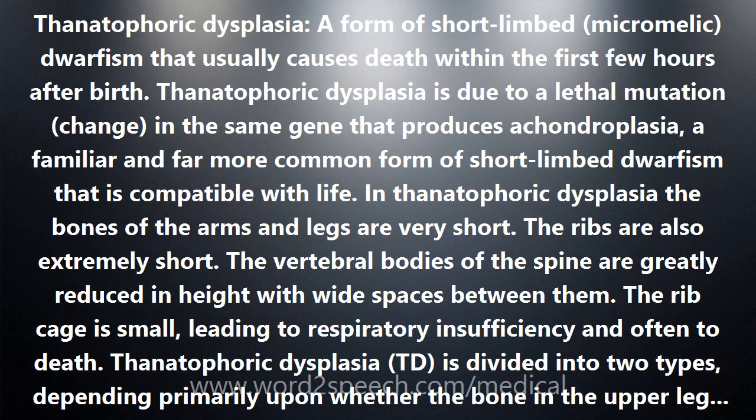Babies with a straight, somewhat longer femur have type II thanatophoric dysplasia, TD2. All babies with TD2 also have a severe malformation of the skull, brain and face called cloverleaf skull, in which the skull from the front looks like a three-leafed clover. All babies with severe cloverleaf skull appear to have TD2. This malformation can be detected before birth by ultrasound.